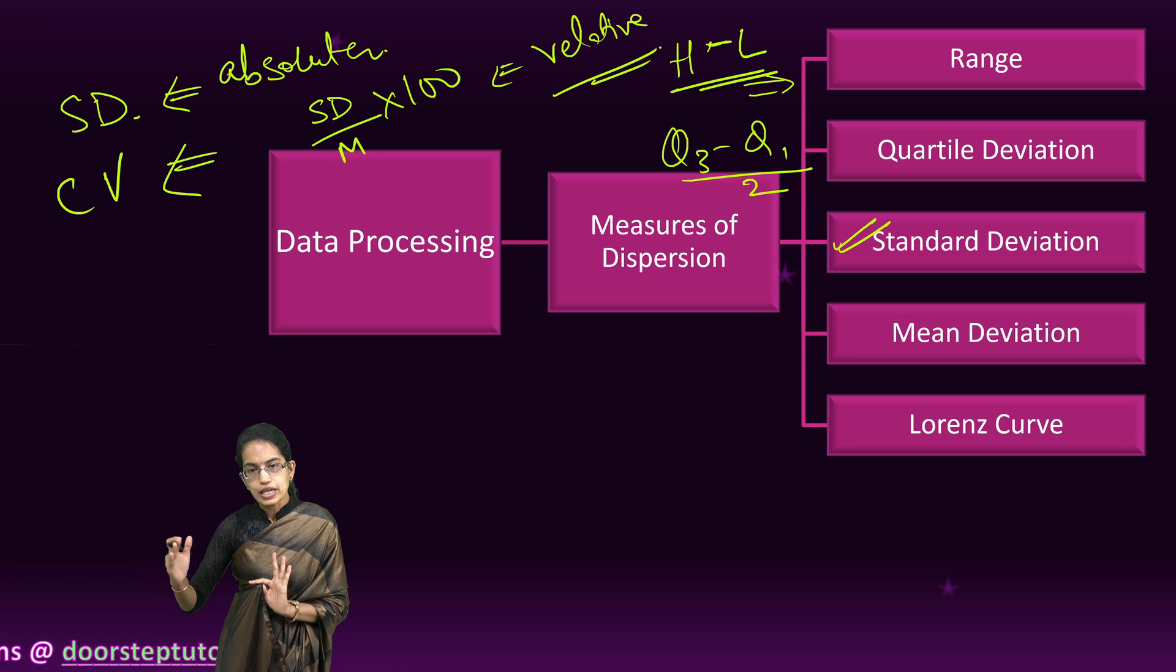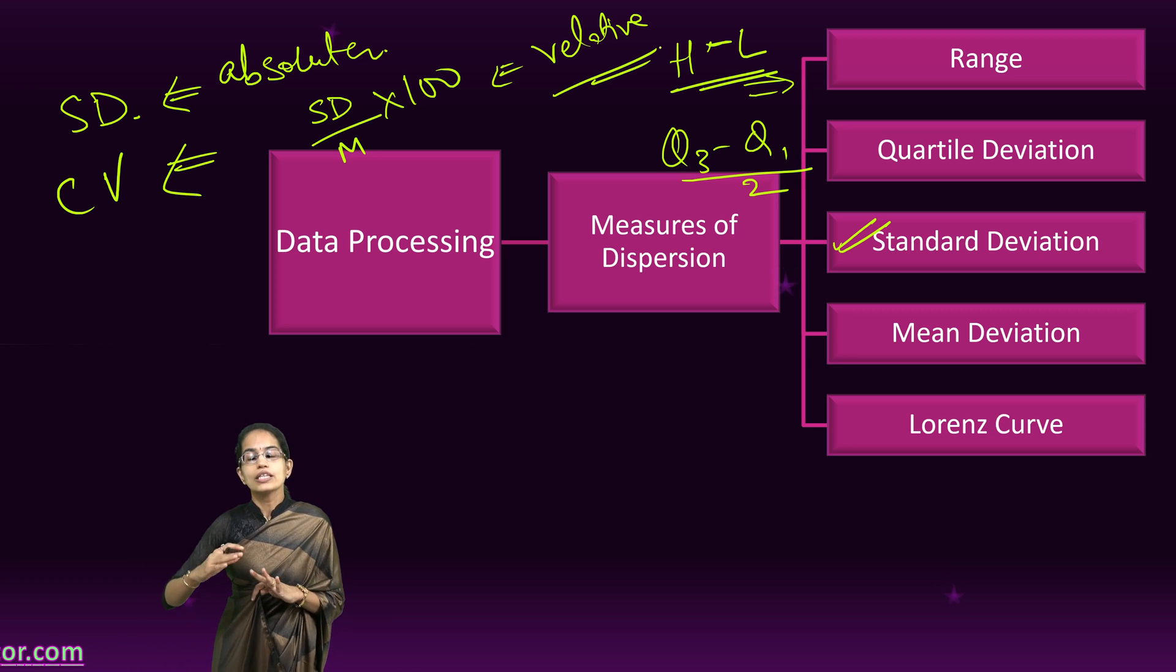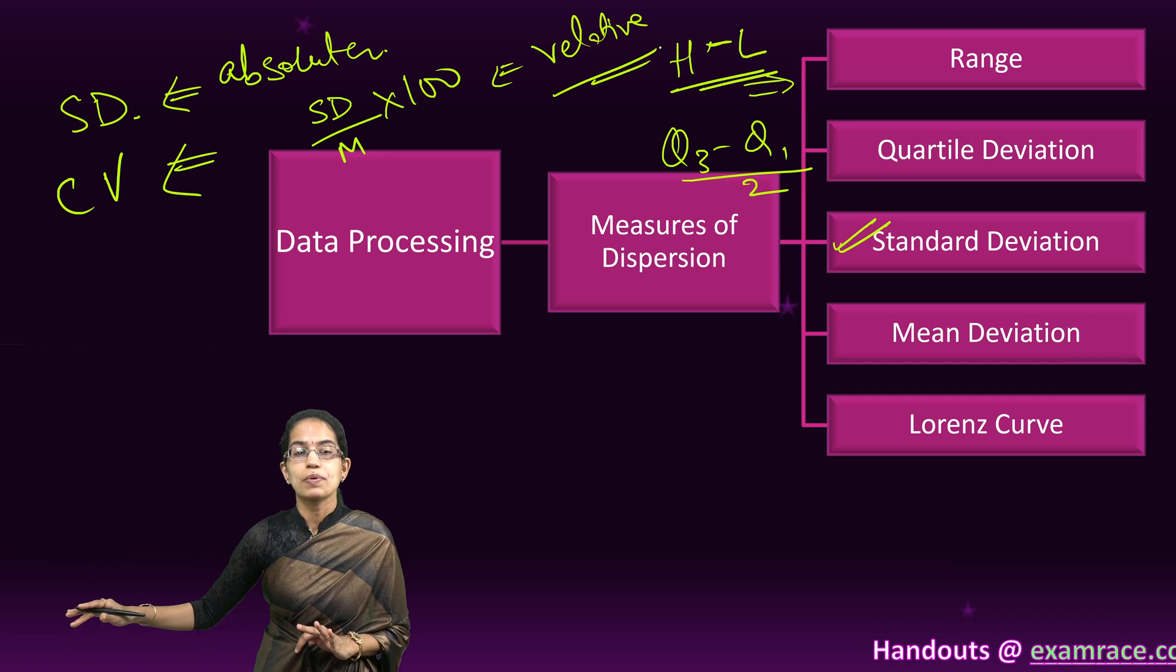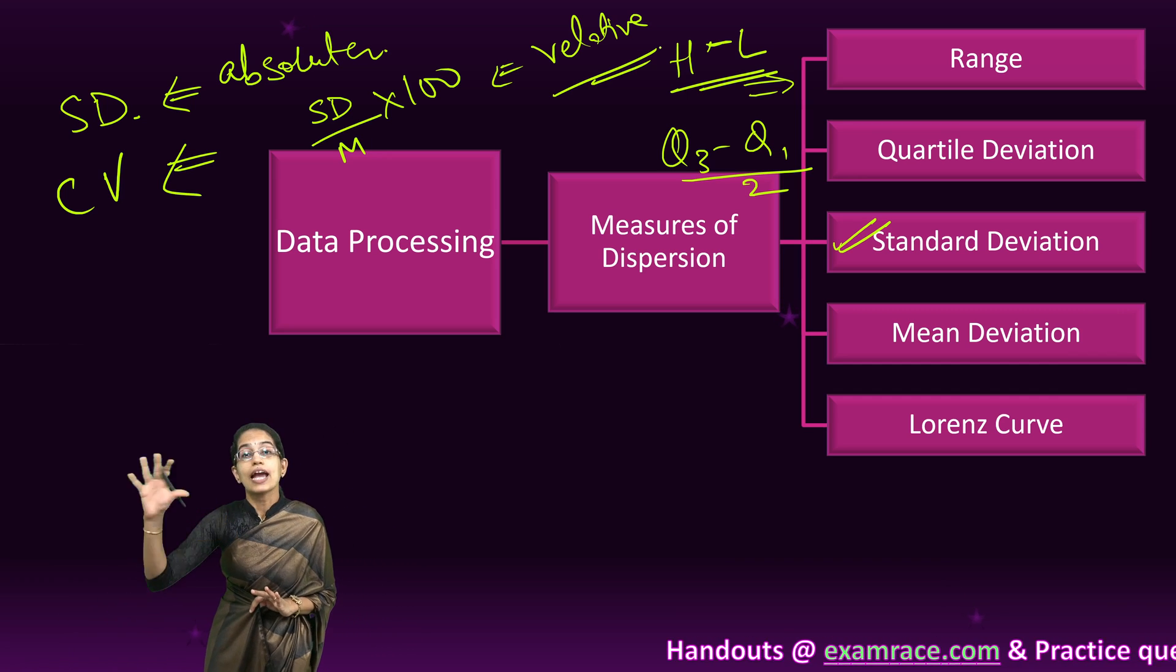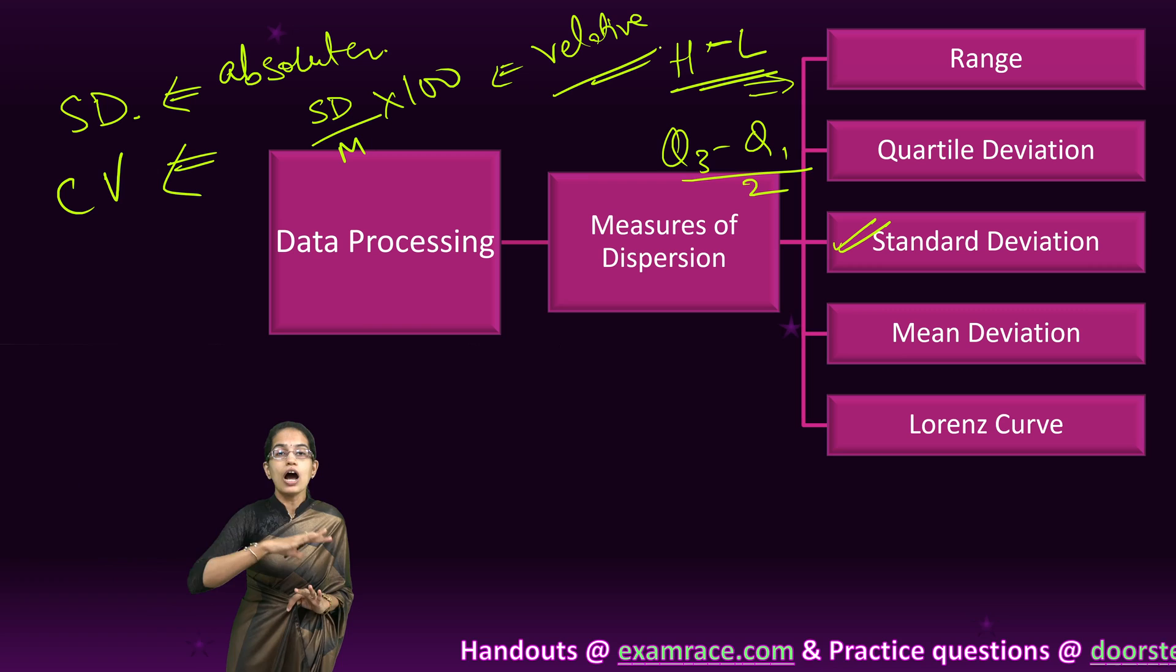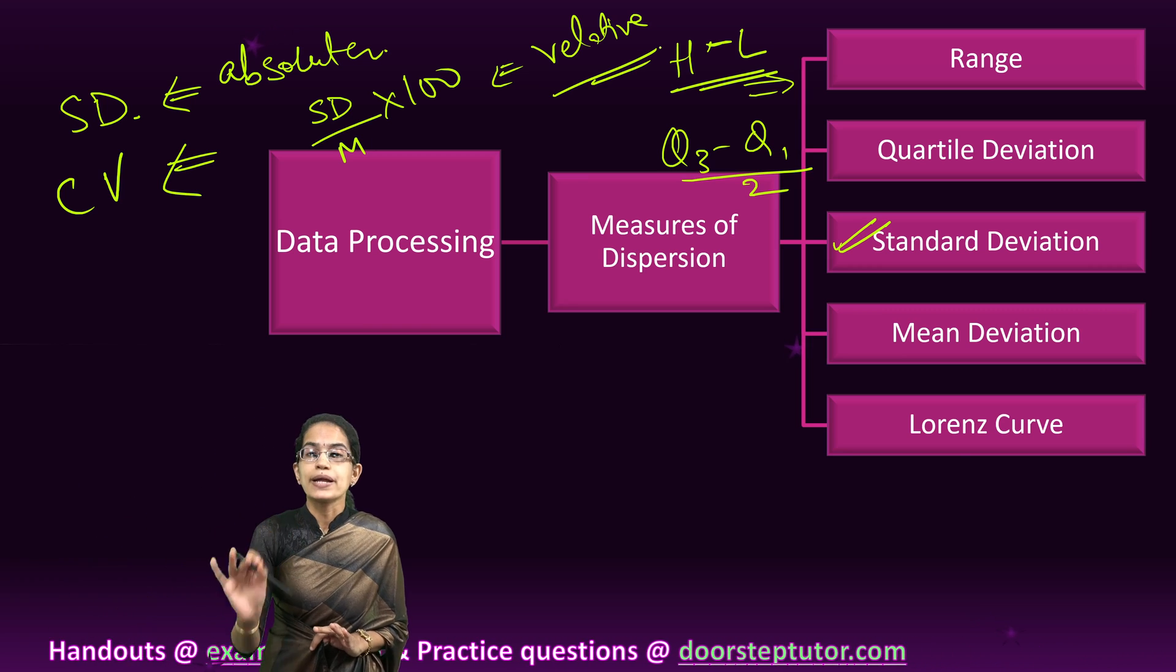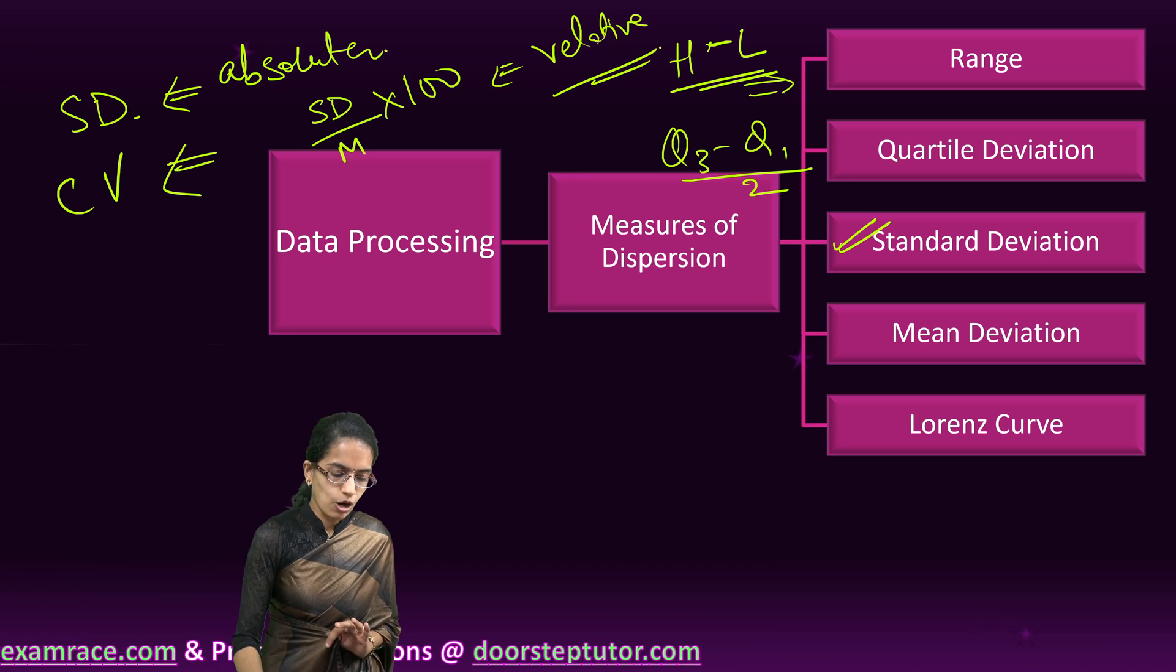This explains the dispersion - the scattering of the scores. How the scores or the numbers or the data is scattered is better understood through the method of dispersion.